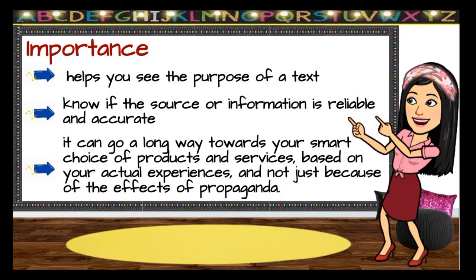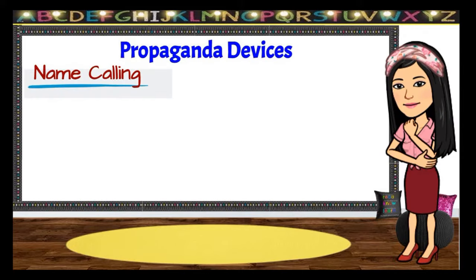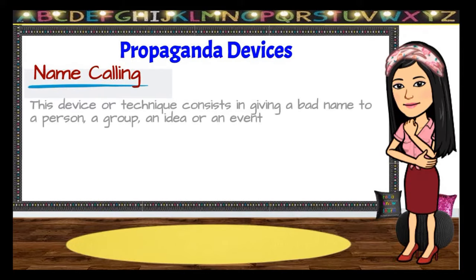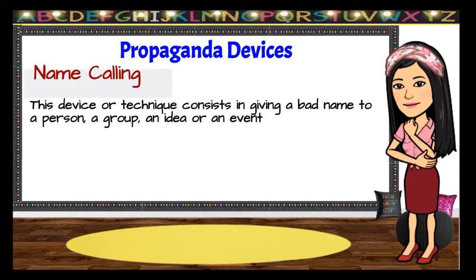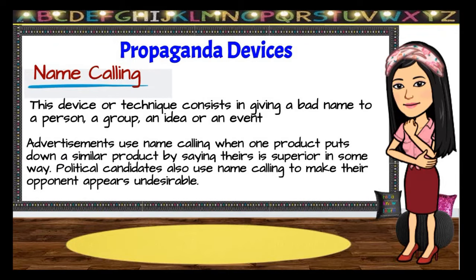Let us begin by understanding the different propaganda techniques or devices that are commonly used. First is name-calling. This device or technique consists in giving a bad name to a person, a group, an idea, or an event. Name-calling advertising is the most common between two brands that are similar, well-known, and have a loyal fan base. They need to lure consumers from the other side to their side. Advertisements use name-calling when one product puts down a similar product by saying theirs is superior in some way. Political candidates also use name-calling to make their opponent appear undesirable.